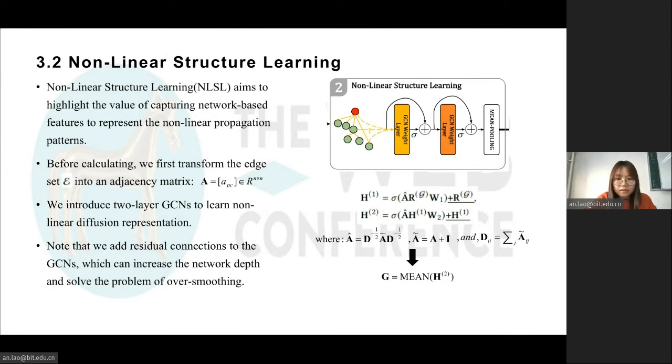We introduce two-layer GCNs to learn non-linear diffusion representations, where these items are the node's feature representation from the RHFL. We add residual connections to the GCNs, which can increase the network depth and solve the problem of over-smoothing. We then employ mean pooling operators to extract the final structural representation G.